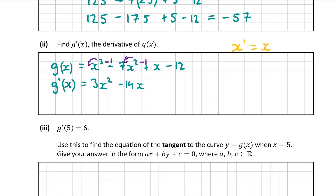Now differentiating x: x by itself is x to the power of 1. Bring the 1 to the front and reduce the power by 1, giving x to the power of 0. Any number to the power of 0 is always 1, so this differentiates to 1. Then we differentiate minus 12 — a number without any x — which goes to 0. So our final answer for part A2 is 3x squared minus 14x plus 1.